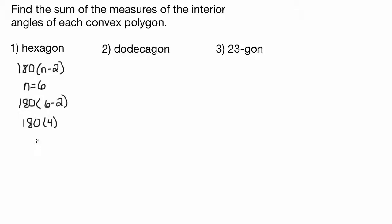Which is just going to be 720. There you go. So the sum of the measures of the interior angles of a hexagon is 720 degrees.